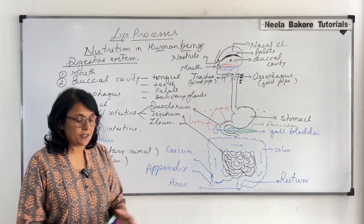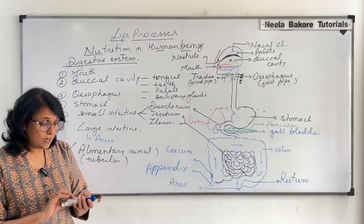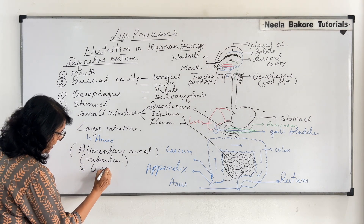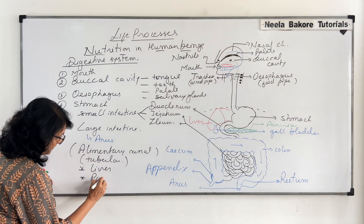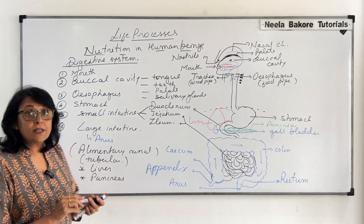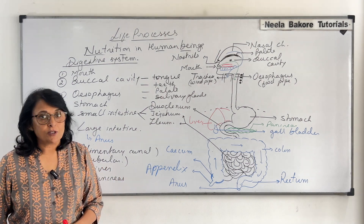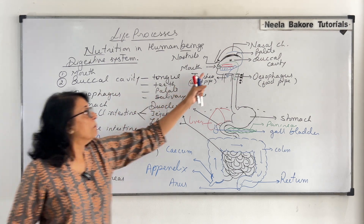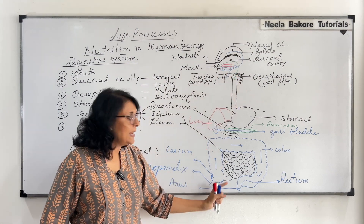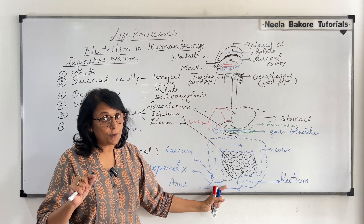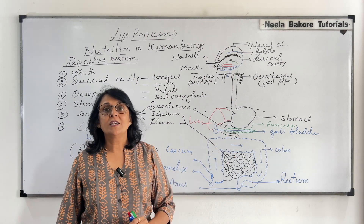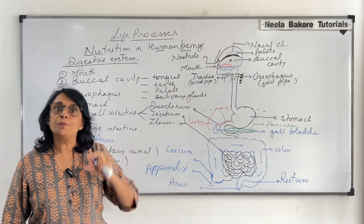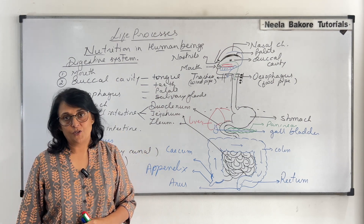This is our digestive system. When we say digestive system, we include the mouth and buccal cavity, the complete alimentary canal — that is the tubular part — and the glands like liver and pancreas, without whose secretion digestion would not be possible. In the next part, we will take up all the different parts and try to understand their detailed functions.